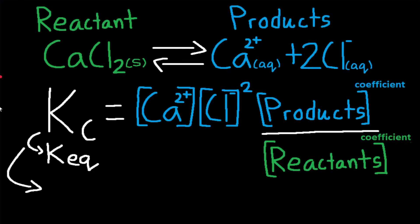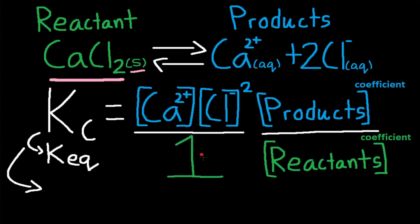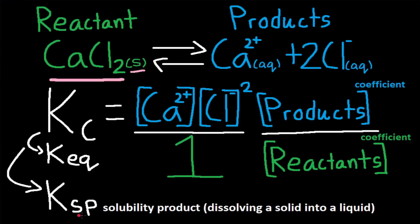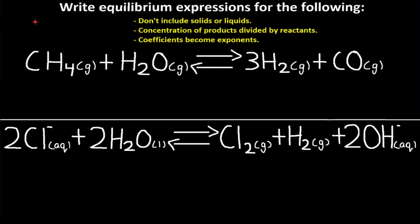Kc doesn't include CaCl2 because it is a solid, and solids, just like liquids, have concentrations that remain almost constant throughout the reaction. So Kc is just equal to the products, but you can also write it as divided by 1 as a placeholder for the CaCl2 solid. Also, make sure not to confuse the charge as an exponent — it happens to the best of us. This expression can also be written as Ksp because we have a solid dissociating into aqueous ions.